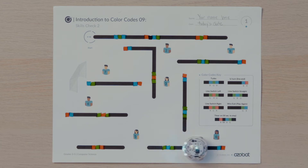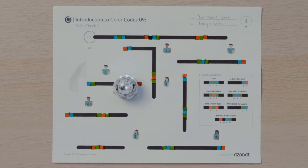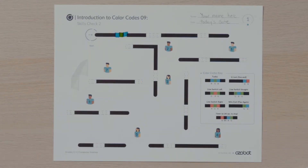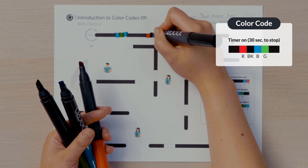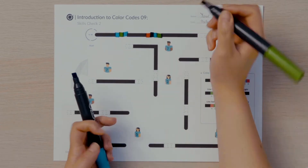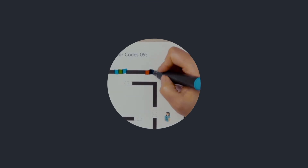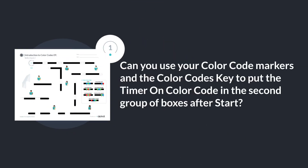Now that Ozobot will move quickly around the field, it also needs to be programmed to stop when the game is over. Since there are 30 seconds left in the game, Ozobot will be programmed to turn off after 30 seconds. The second missing color code after the start is the timer on 30 seconds to stop. Look at the color code's key to find the correct sequence of color. Can you use your color code markers and the color code's key to put the timer on color code in the second group of boxes after start?